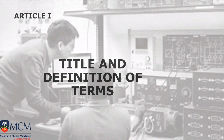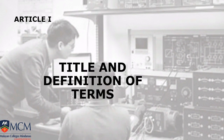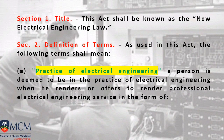Article 1 of RA 7920 is composed of the title and definition of terms. Take note — the definition of terms in RA 7920 is commonly used in some of the problems and questions in board exams, and you need to familiarize each of the terms. Section 1 represents the title of the Republic Act, which is the New Electrical Engineering Law. Section 2 gives the definition of terms used in this Act.